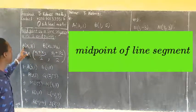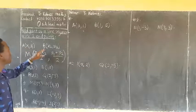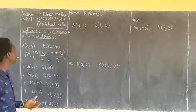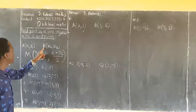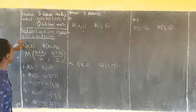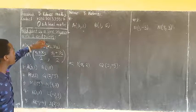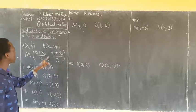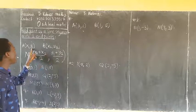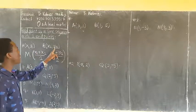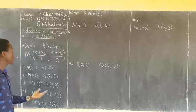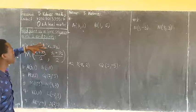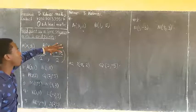If you have A(X1, Y1) and B(X2, Y2) as the endpoints of the line segment AB, to get the midpoint you calculate X1 plus X2 divided by 2 for the X coordinate, and Y1 plus Y2 divided by 2 for the Y coordinate. That's how you get the midpoint. This will be the X coordinate and this is the Y coordinate.